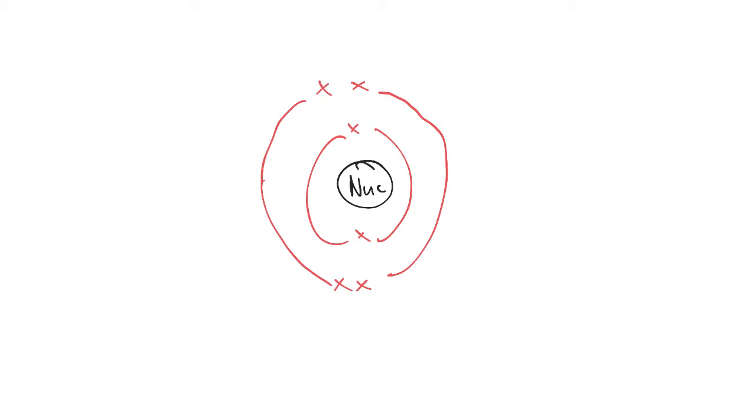Has how many electrons? Six. What's the electron configuration? For all intents and purposes, it's 2,4. Two, four, which means it has six total electrons, which means it's what element? You should know it's carbon. Excellent. So it's carbon.